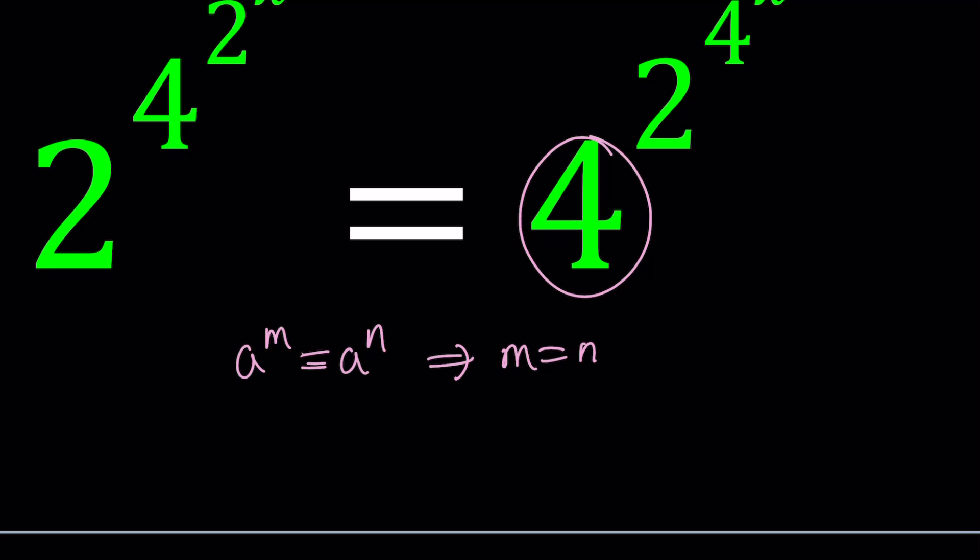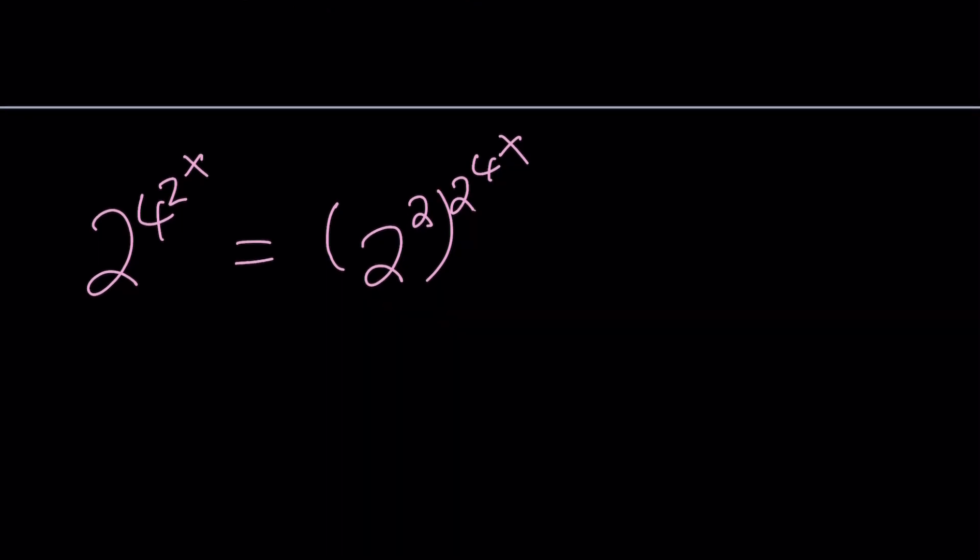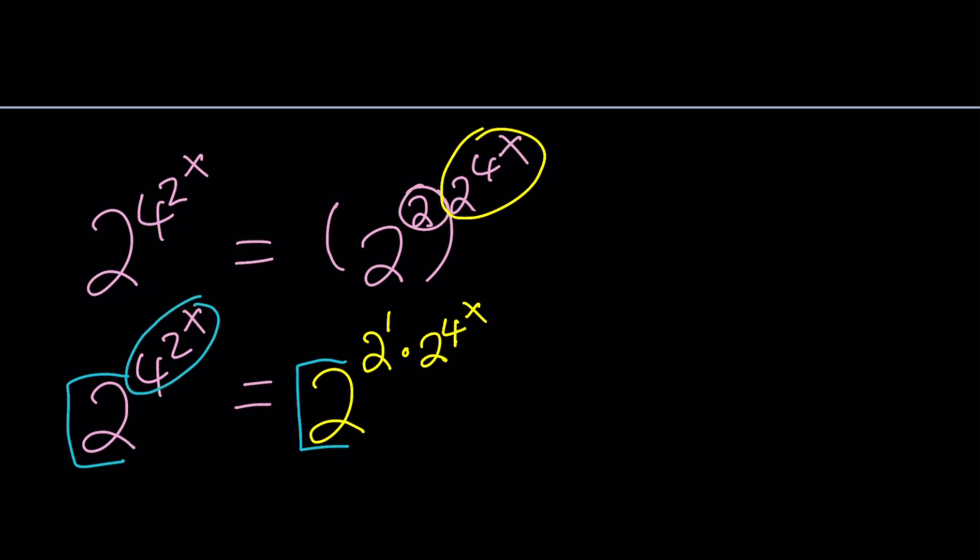Great. Now let's see how we can do that. I'm going to write this as 2 to the power 4 to the power 2 to the power X. And on the right-hand side, instead of the 4, I'm just going to write 2 squared and put that in parentheses, and then raise it to the power 2 to the power 4 to the power X. So we've got to keep track of this. We've got to be careful because we have a lot of exponents. Now, what should we do next? We have a 2 here to the power 4 to the power 2 to the X. And on the right-hand side, this exponent is actually multiplied by the other exponent.